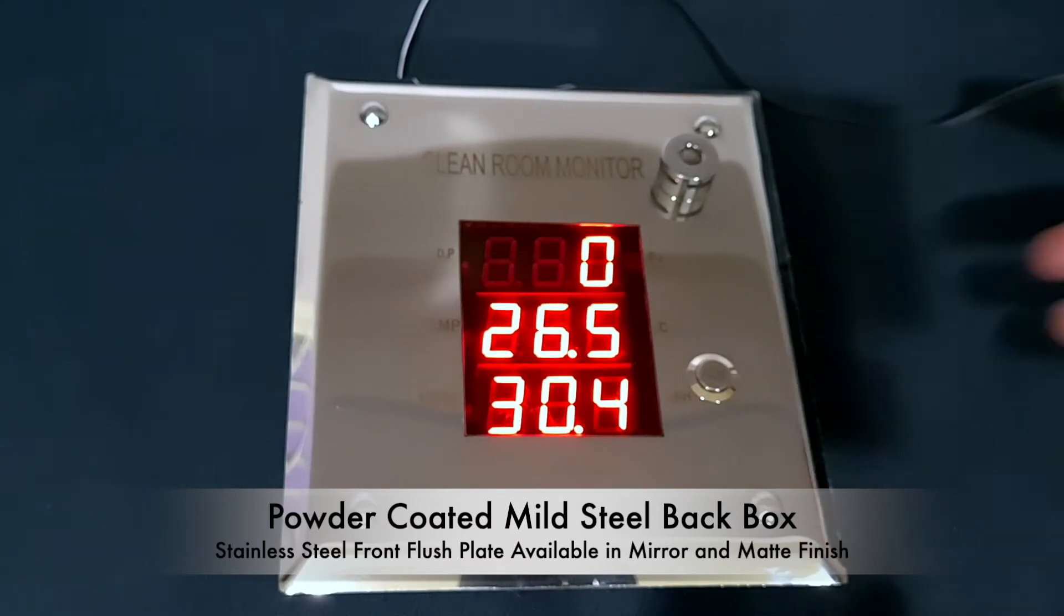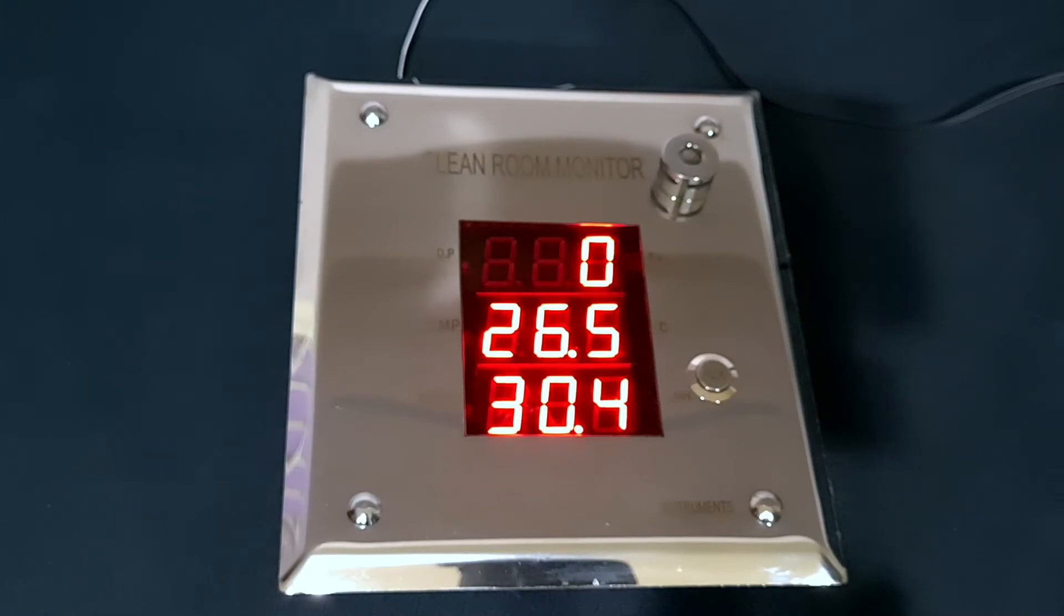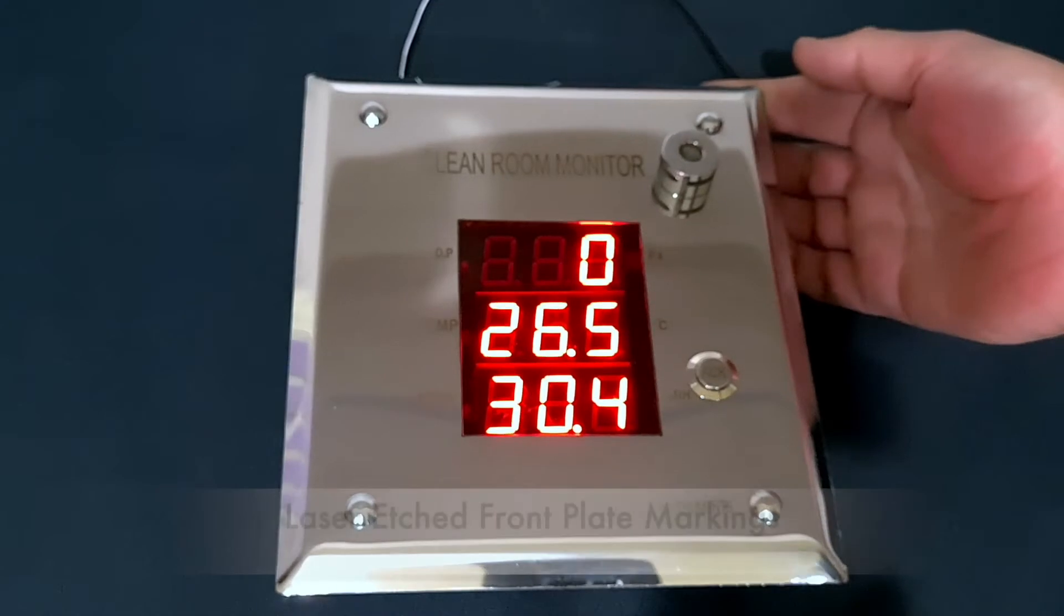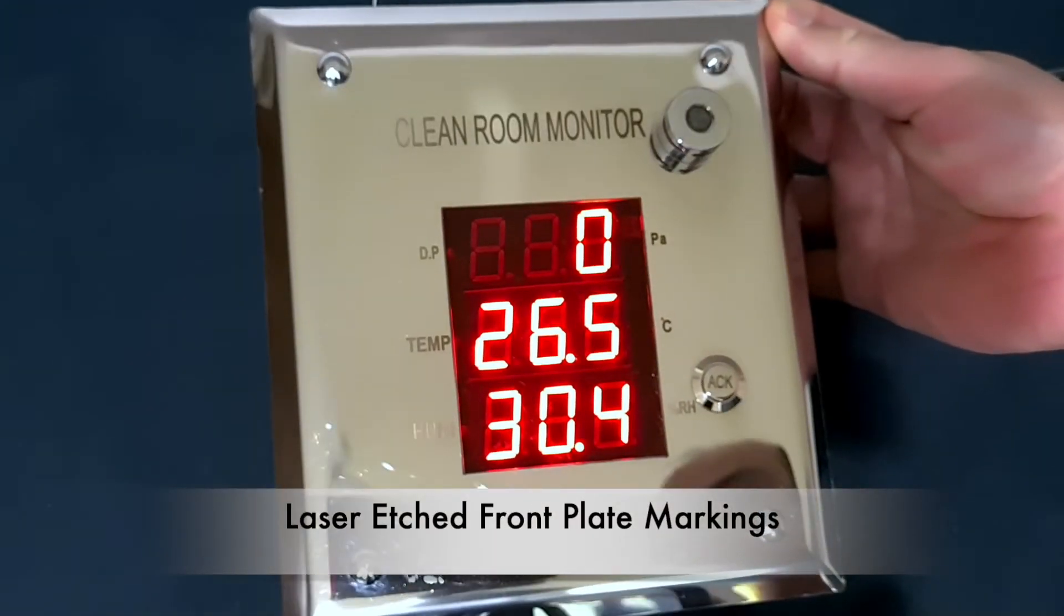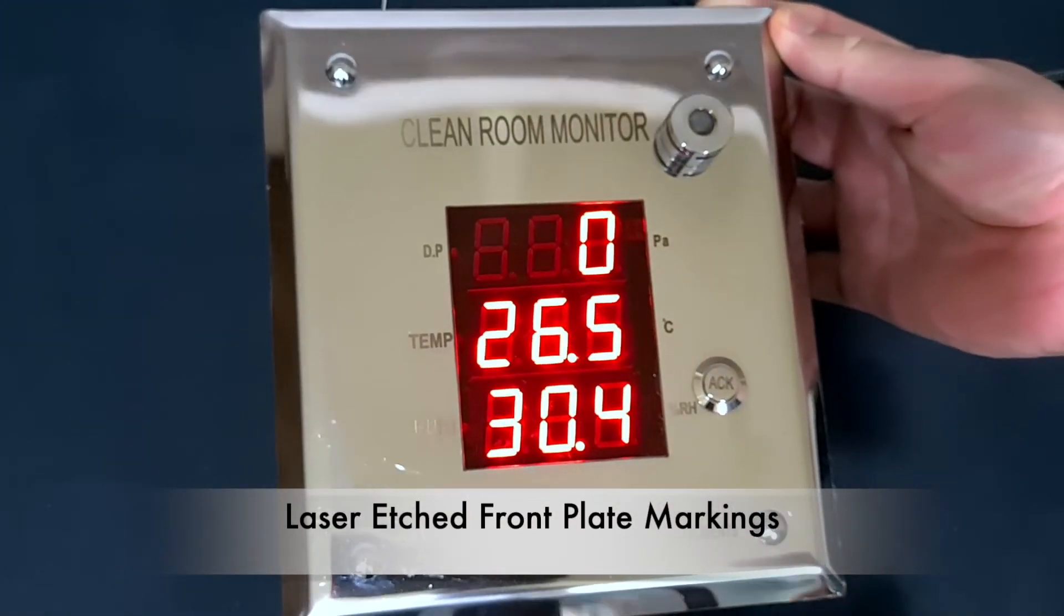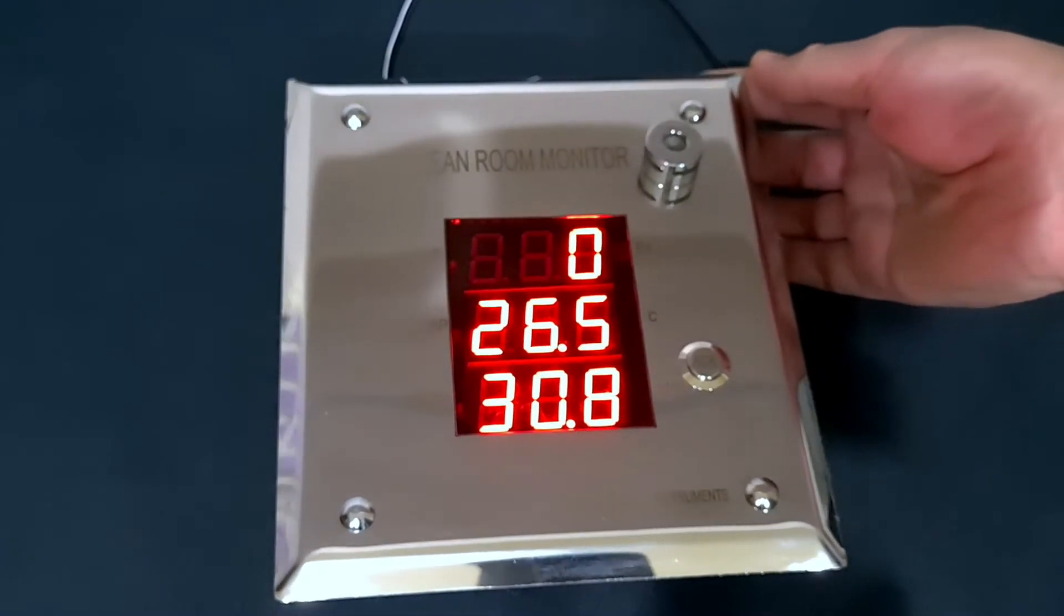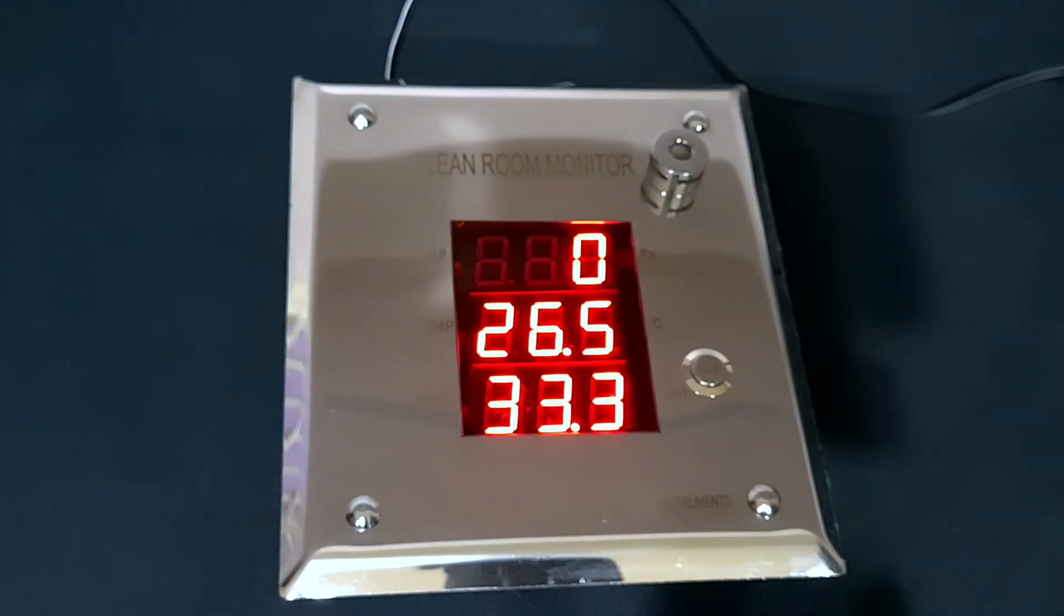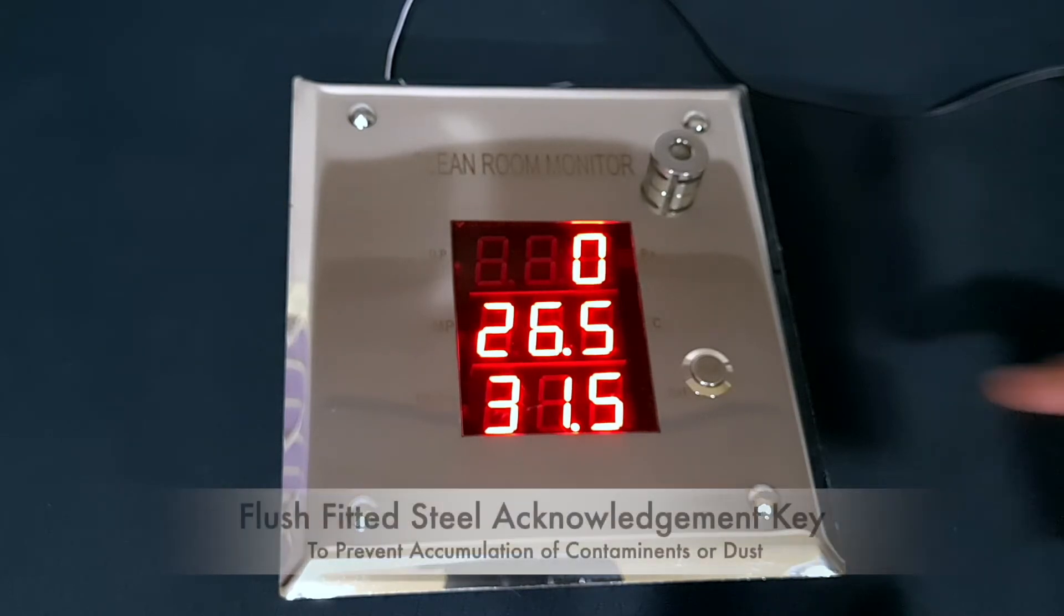The printing on the front stainless steel plate is laser etched, as you can see. This does not have a sticker, as stickers tend to peel off over time, thus inviting dust to stick to the edges. The sticker is totally avoided, and even the acknowledgement key is steel and flush fitted, not allowing any contamination in the clean room.